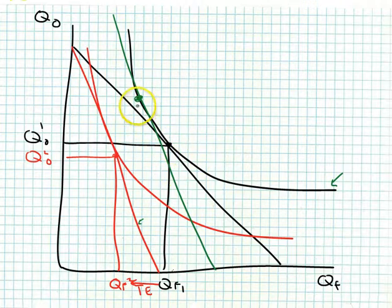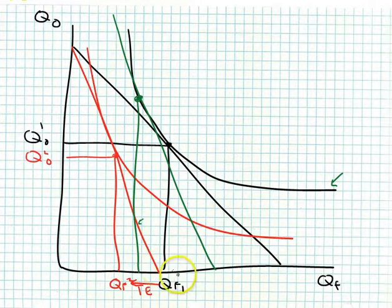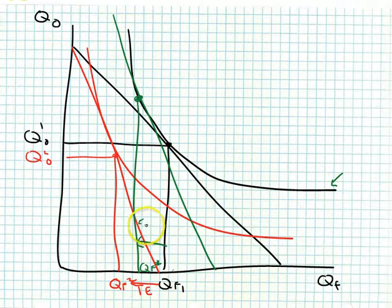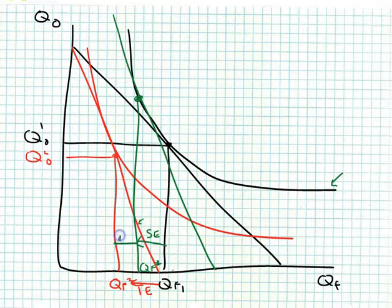There is a point of tangency on this imaginary budget line and the original indifference curve, somewhere in between QF1 and QF2 — we call that QF star. I have now broken down the total effect from QF1 to QF2 into the movement from QF1 to QF star, which is the substitution effect, and the movement from QF star to QF2, which is the income effect.